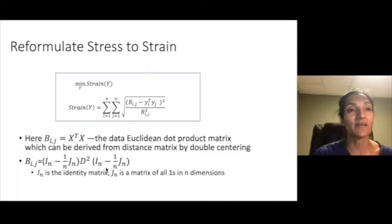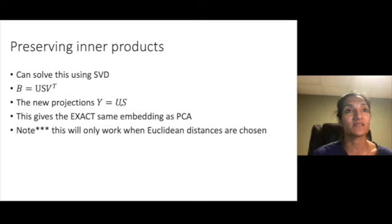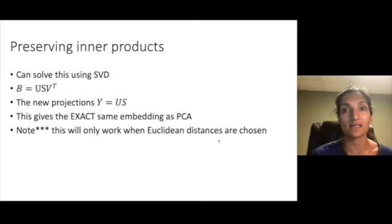It turns out that using some clever trigonometry and algebra we can actually derive the dot product matrix from the distance matrix and that's by way of what's called the centering operation. Here we have these centering matrices multiplying the squared distance matrix on either side where i n is an identity matrix and j n is a matrix of all ones in n dimensions. If we do this it turns out that we it will result in the dot product matrix instead then we can use of course SVD to solve this. When you solve this with SVD you get new projections or coordinates y as u times s and this actually gives the exact same embedding as PCA. Note that this will only work when Euclidean distances are chosen.